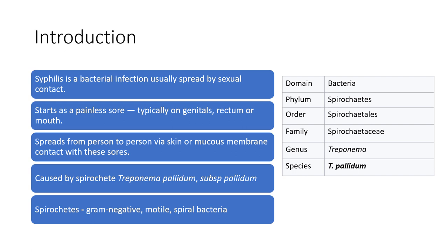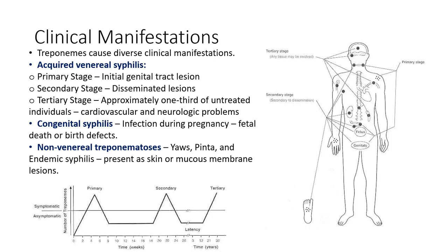The causative organism, Treponema pallidum, is generally a spirochete kind of bacteria that is spirally shaped, gram negative, and motile. It belongs to the subspecies pallidum. Now getting on to the clinical manifestations of syphilis.